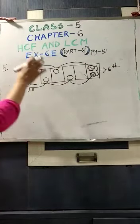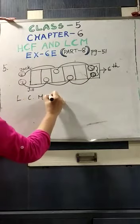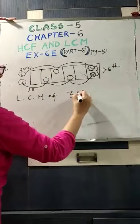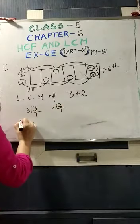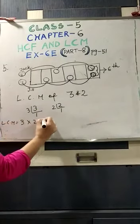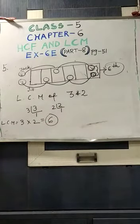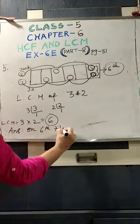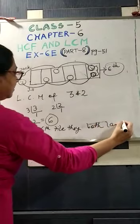I have shown you through this picture. But when you do the sum, simply do the LCM of 2 and 3. What is the LCM of 3 and 2? Three into two is going to six. Six is the answer. Your question was: which is the first tile on which both land? Your answer will be: on the sixth tile, they both land.